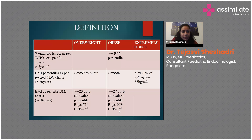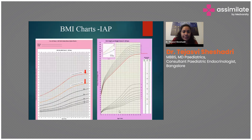In children above two years, we use BMI charts. In India, we use the IAP charts for BMI, and there are two cut-offs: the 23rd adult equivalent and the 27th adult equivalent. Any child with BMI above the 27th adult equivalent is obese, and above the 23rd adult equivalent is overweight. On the IAP growth chart, the orange line represents overweight and the red line represents obese.